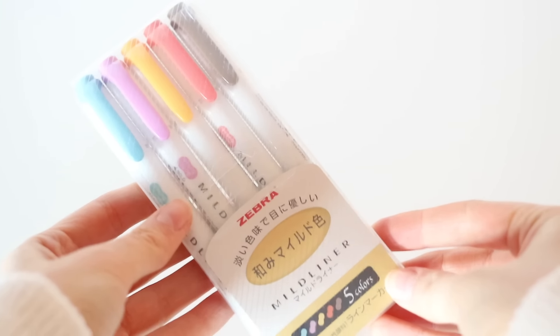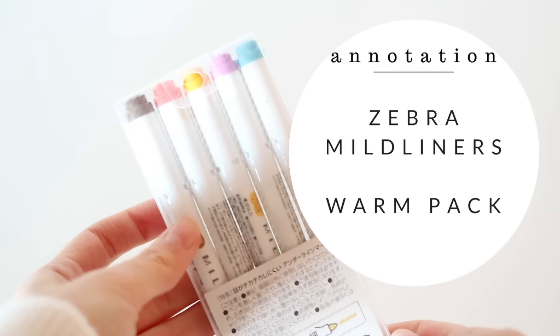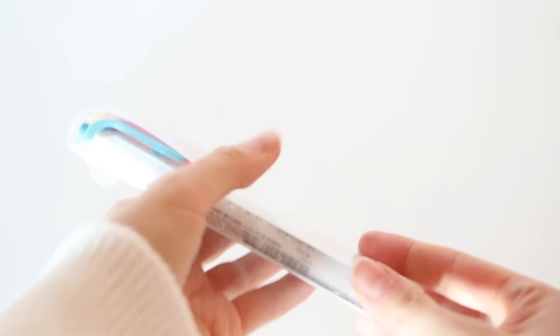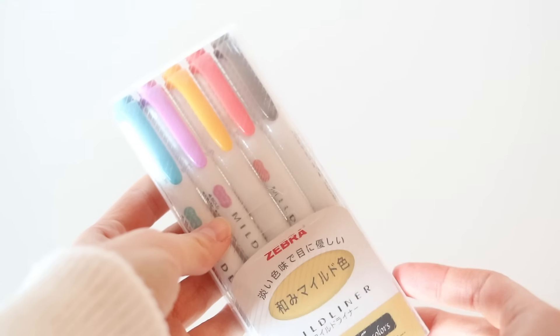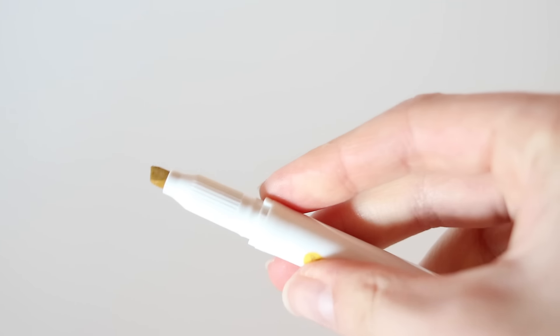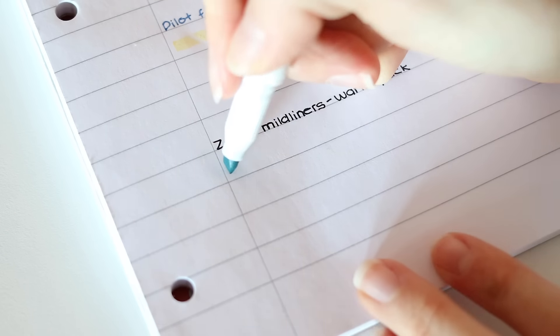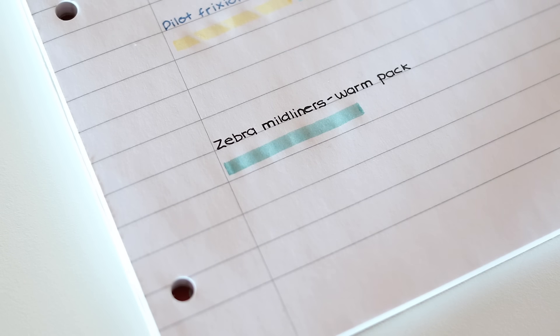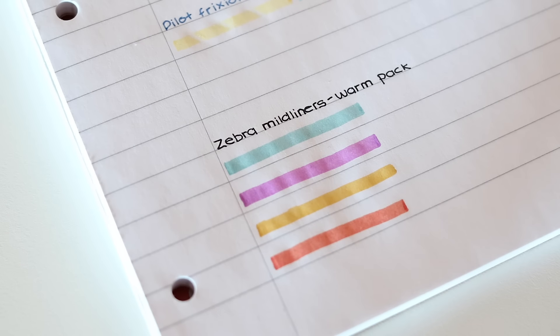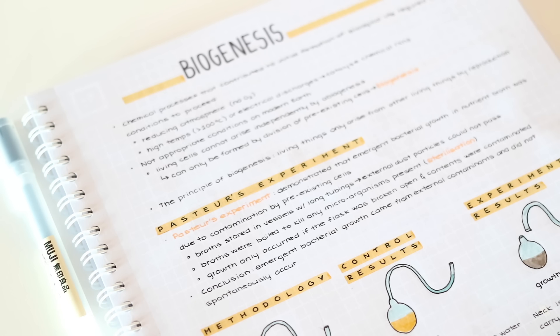The highlighters I use for my notes are the Zebra Mildliners and my favorite pack is this one which is called the Warm pack I believe. The highlighters are double-sided so they work well for both highlighting and underlining and they bleed very little compared to other highlighters like these Stabilo ones. They pulled a tiny bit on the regular thin paper I used here but they do not show through at all when I use White Lines.